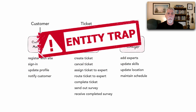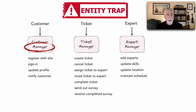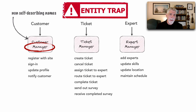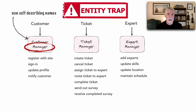The first problem has to do with the word 'manager.' The first problem with the entity trap is that we created components based on entities, but these are non-self-describing names. What does Customer Manager do? I guess it manages customers. What does Ticket Manager actually do, given that name? I suppose it manages tickets — but that's what the whole system does. It's a ticket management system. So the first problem is: we look at the name of the component and we have no idea what it does.